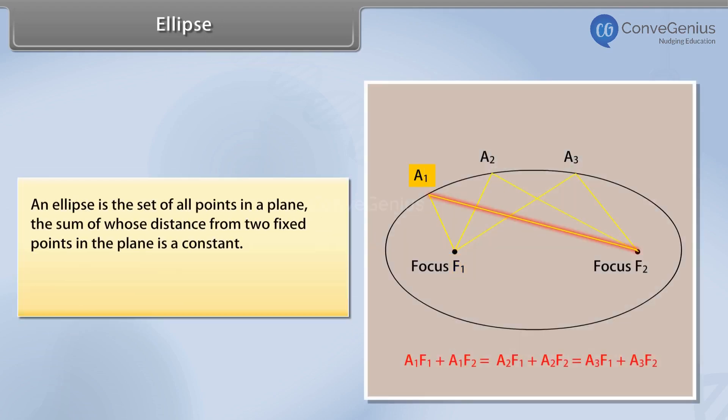An ellipse is the set of all points in a plane, the sum of whose distance from two fixed points in the plane is a constant.